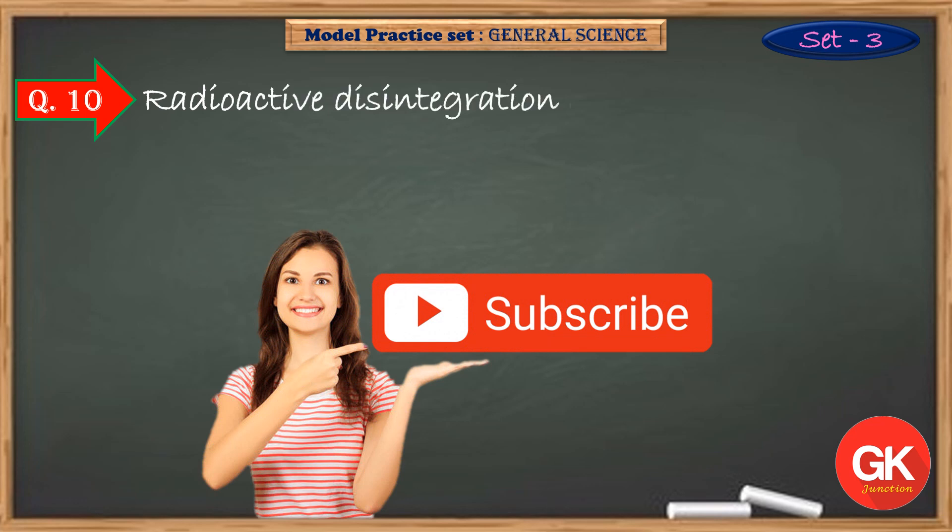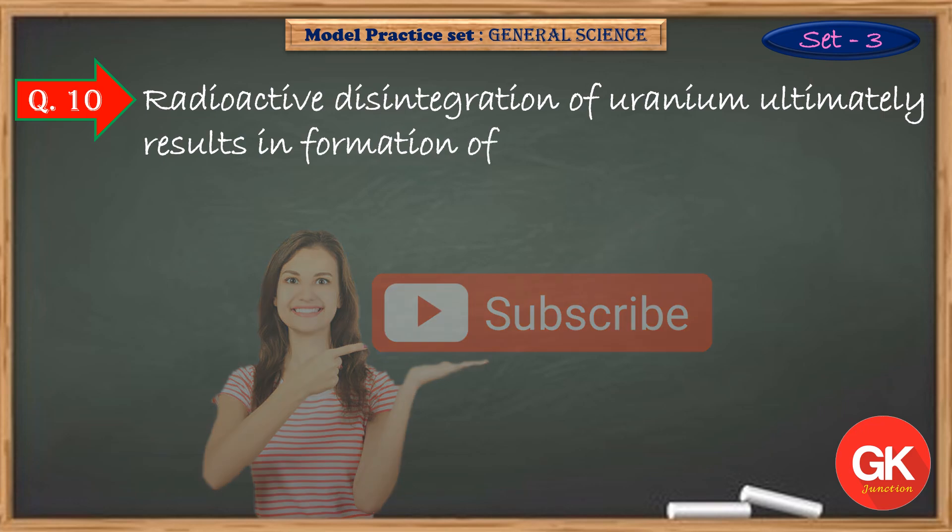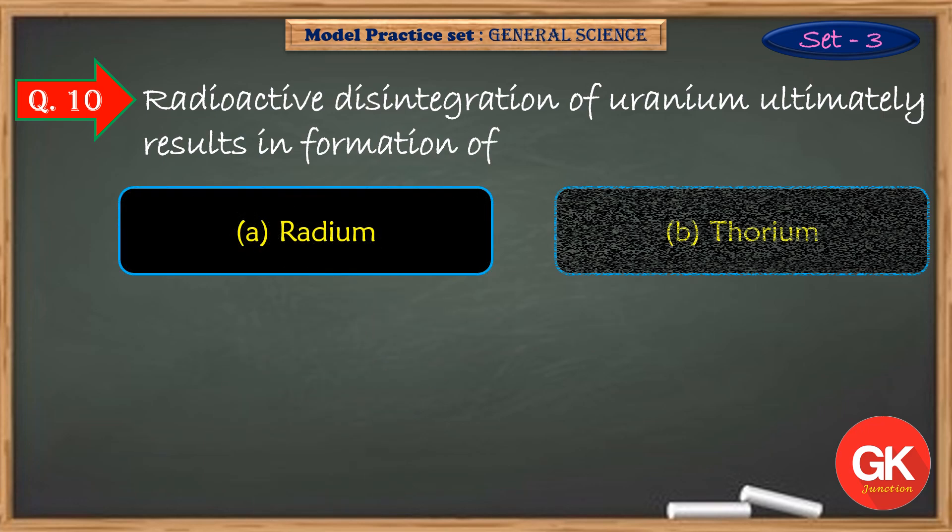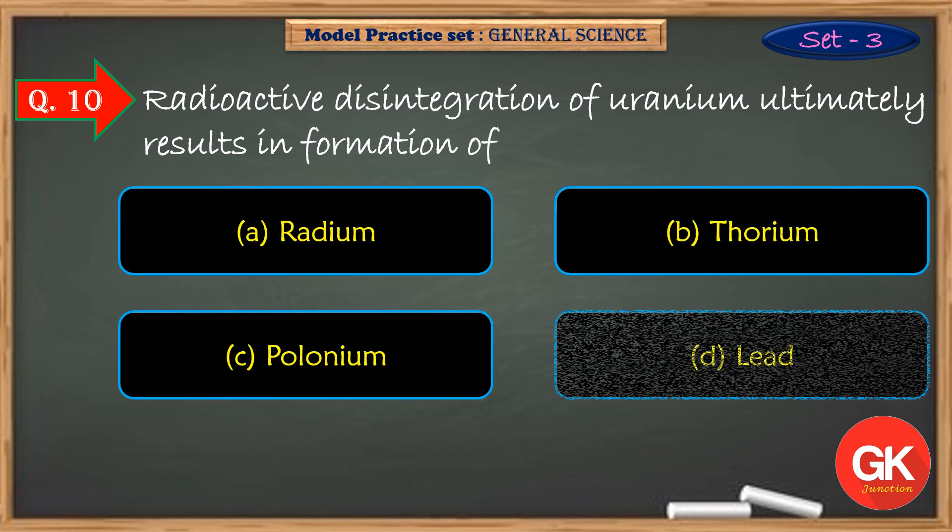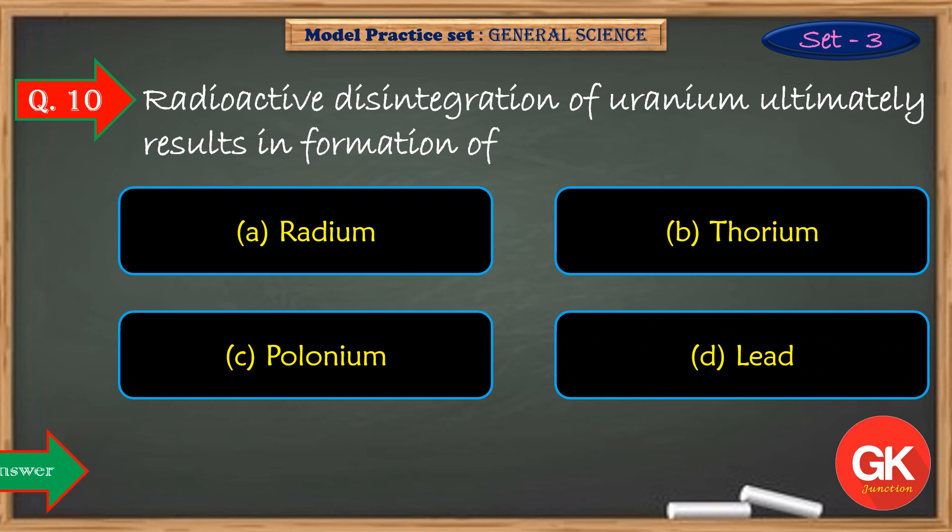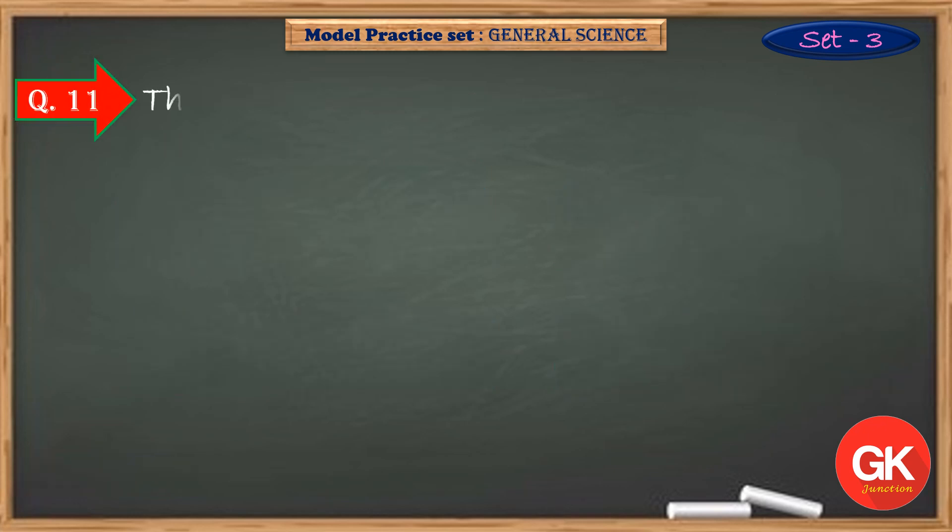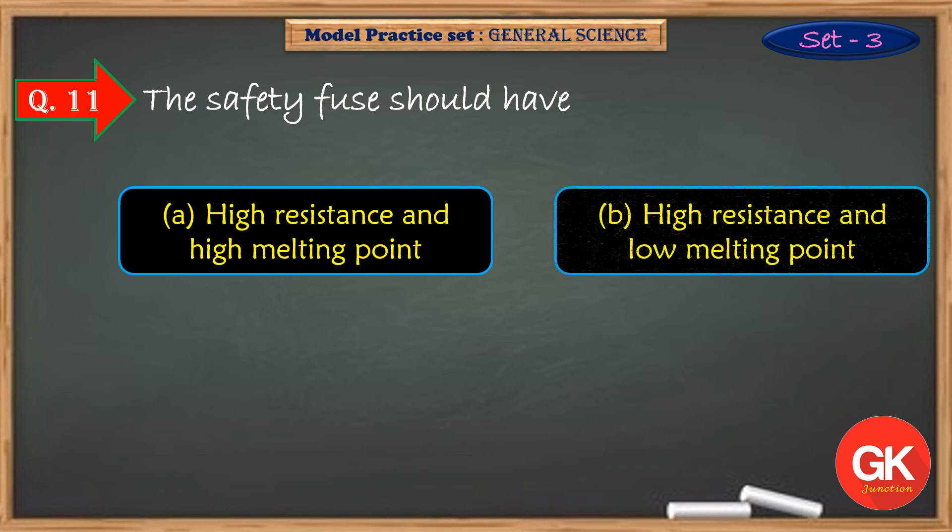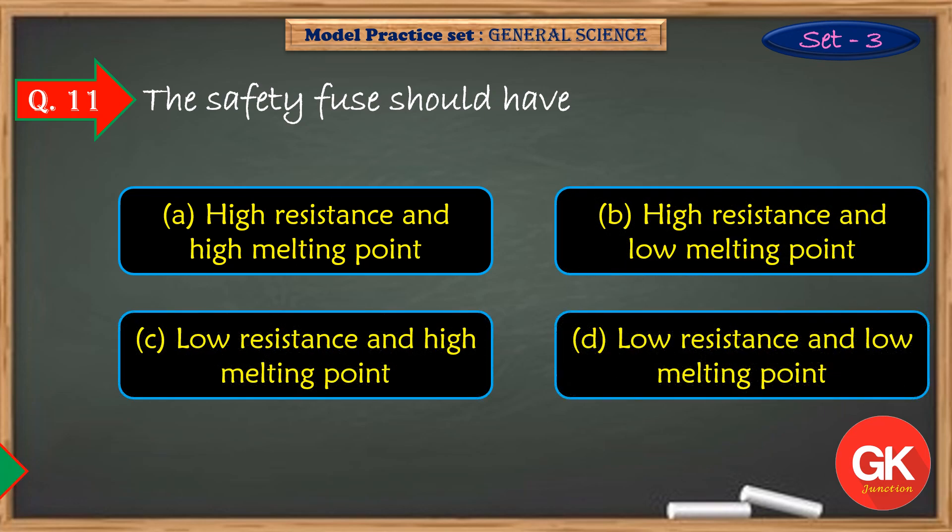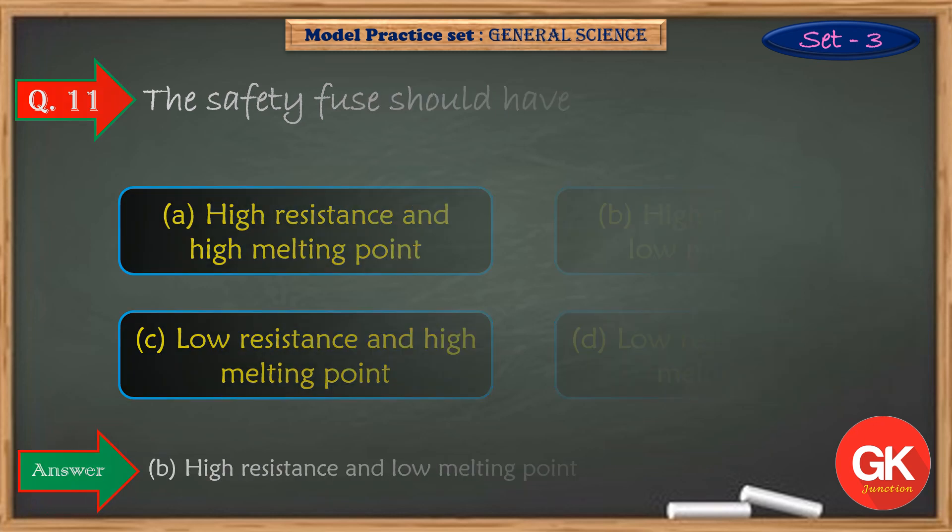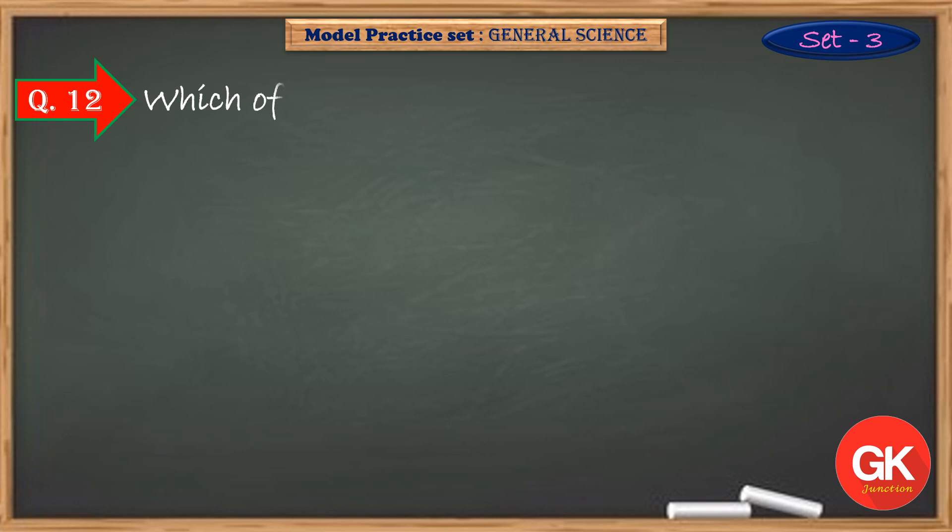Radioactive disintegration of uranium ultimately results in formation of. The safety fuse should have. Which of the following is an egg laying mammal?